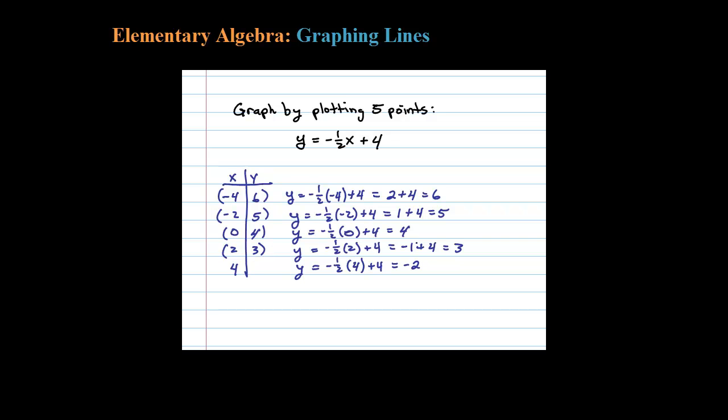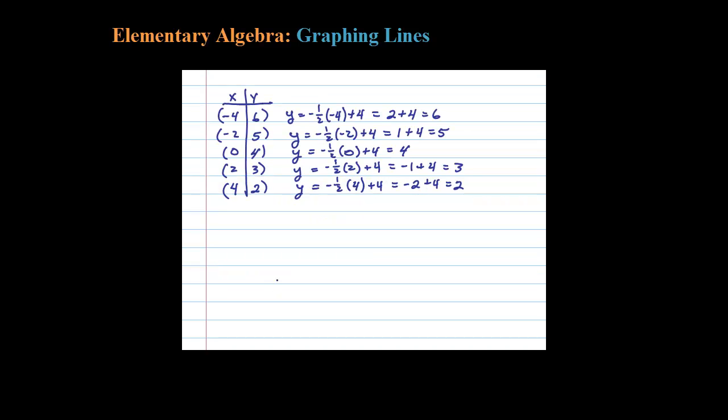-2 plus 4 equals 2. Here's the five ordered pairs that I'm going to plot. Let's draw a Cartesian coordinate system. This will be my x-axis and this here will be my y-axis.